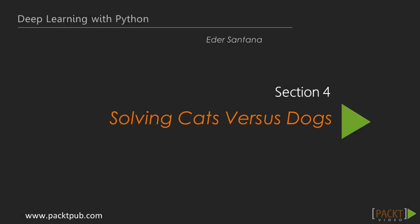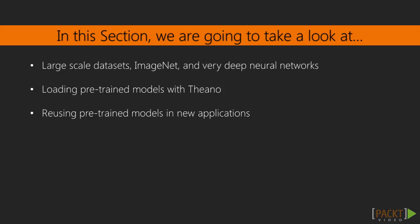Hello and welcome to section 4, solving cats versus dogs. In this section, we are going to talk about large-scale datasets, ImageNet, and very deep neural networks. We'll also cover loading pre-trained models with Theano, and finally, reusing pre-trained models in new applications.